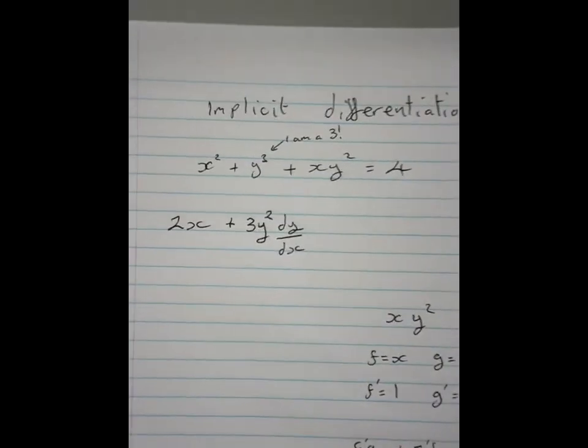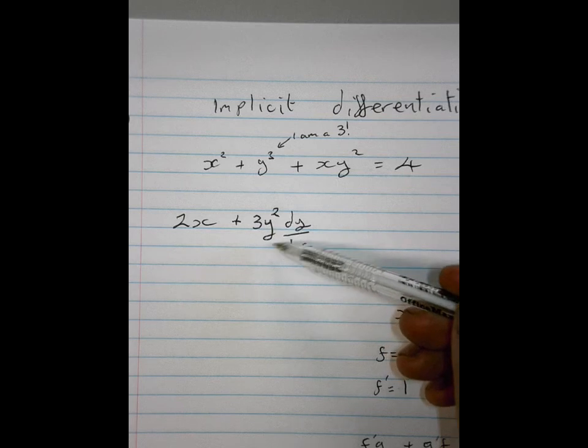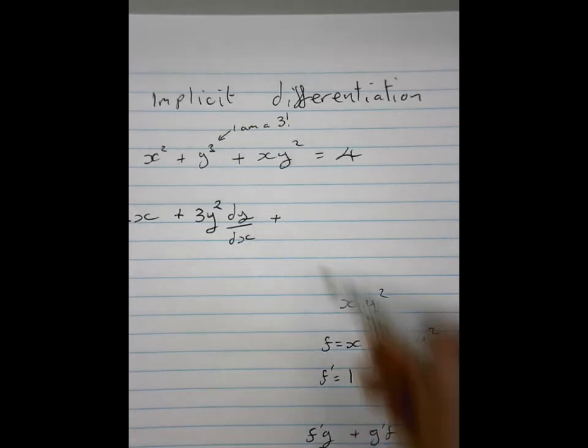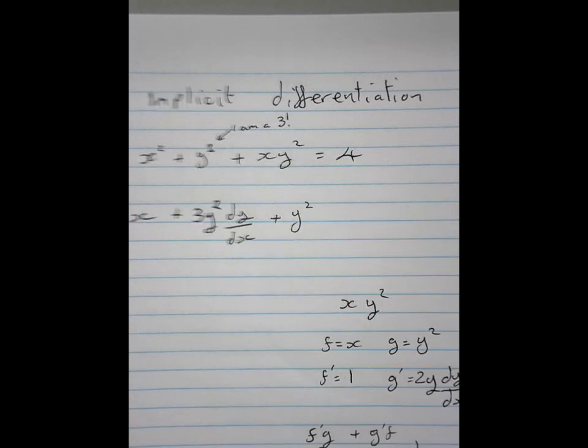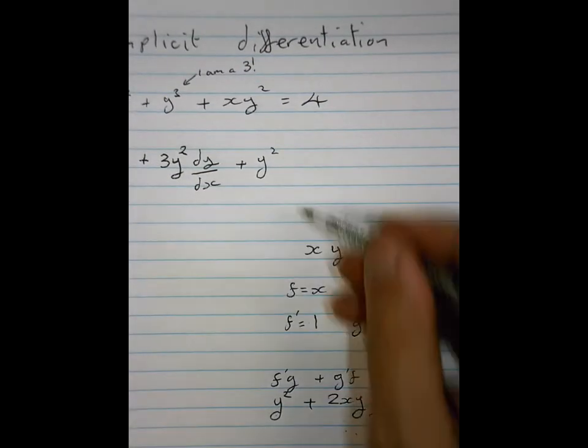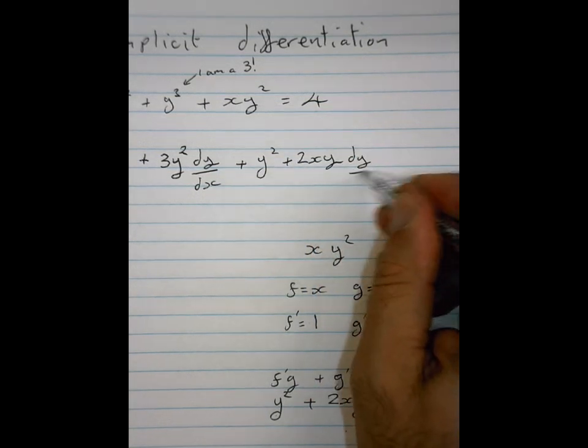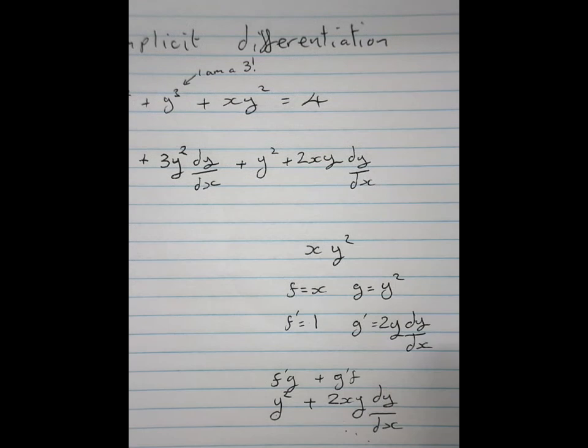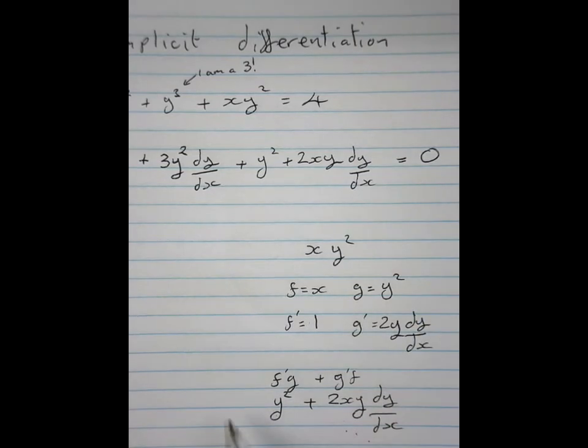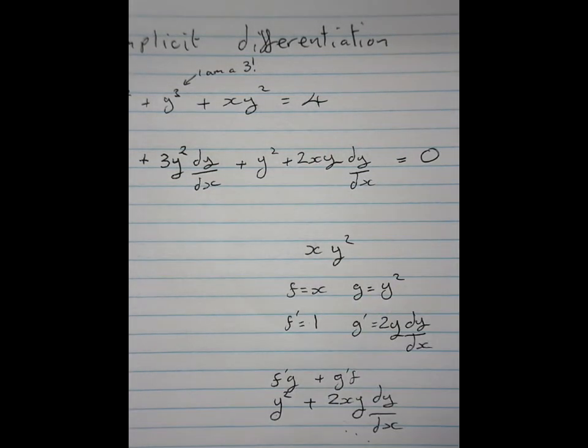Which now tells me, going back up to here, so I did x squared, got 2x. I did y cubed, got 3y squared dy by dx. And now I've got a plus of y squared plus, just down the bottom there, I've got this thing down the bottom. Plus 2xy dy by dx equals 0. Because differentiation of 4 is 0. Is everybody OK with that?